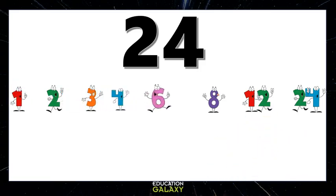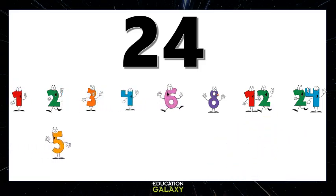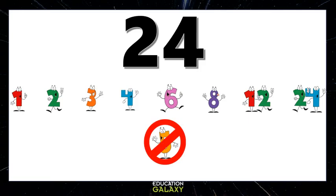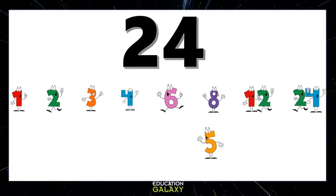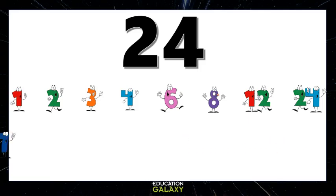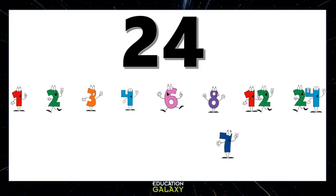5 times nothing equals 24 — it doesn't go into 24 evenly, so 5 is out. We already listed 6. 7 times nothing is 24, so 7 is out too. There we have all the factors of 24.